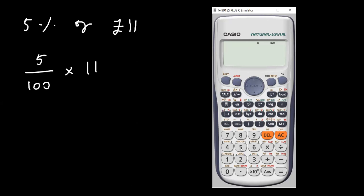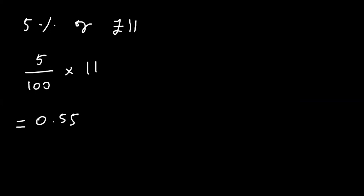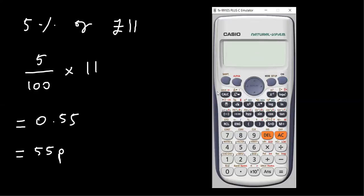So five divided by 100 times 11, and then we just press this button over here to convert it to a decimal. So that would be 0.55 pounds, which is 55 pence. And the other way of entering it in the calculator is to use this button over here.